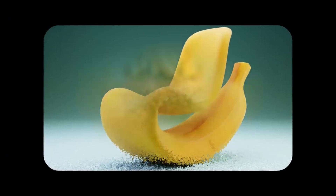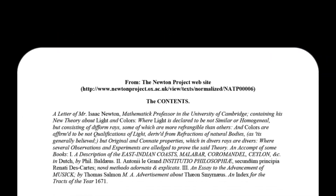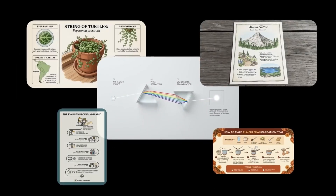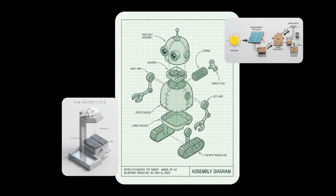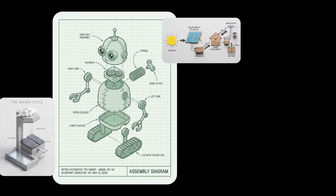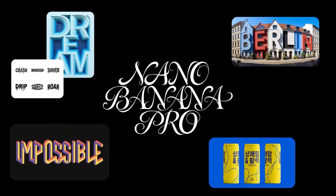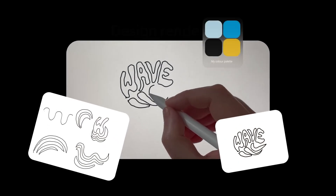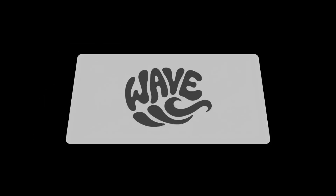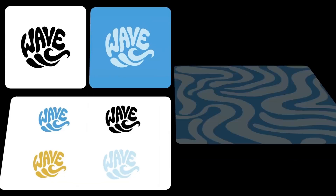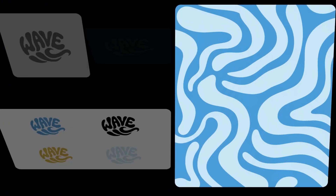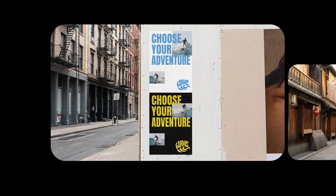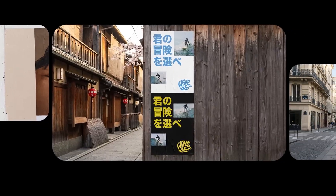Nano Banana Pro is the name Google DeepMind uses for the Gemini 3 Pro image model. It is designed for studio-level precision and control, not just fun filters. This model focuses on clear text, posters, and diagrams; precise control over style and composition; and the use of real-world knowledge so things like cities, eras, and technical scenes look correct.